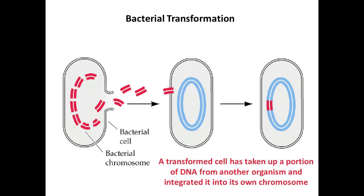In essence, transformation means a cell takes up a portion of DNA from another organism and integrates it into its own chromosome. What we're doing today is giving the bacteria a plasmid — a circular piece of DNA that will stay separate from their chromosome. This is also an active area of research because it happens in nature. Frederick Griffith actually discovered this, and it led to us discovering that DNA is the genetic material in cells.